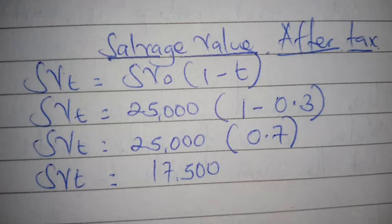The tax rate is thirty percent, which is 0.3. Our salvage value before tax was twenty-five thousand dollars from the question. So: 25,000 × (1 − 0.3) = 25,000 × 0.7 = seventeen thousand five hundred. That is the salvage value after tax.